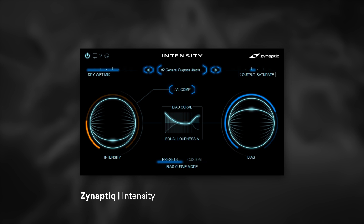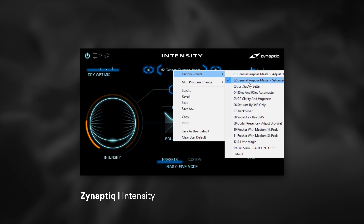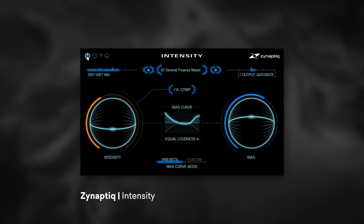What I've done is just dropped it on my master channel for this track. The first thing I'm going to do is just bypass it. I'm using one of these presets — if you come into the factory presets right here in the middle, General Purpose Mastering. I tweaked it a little bit, but I'm going to go ahead and run this right now and click the on/off button right here in the top left so you can hear the difference.